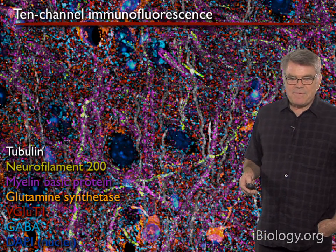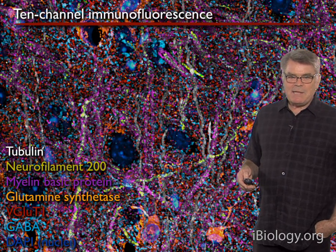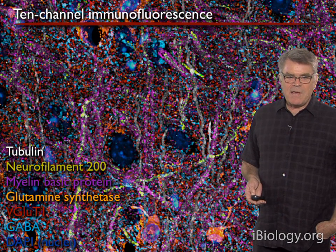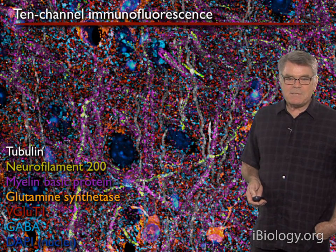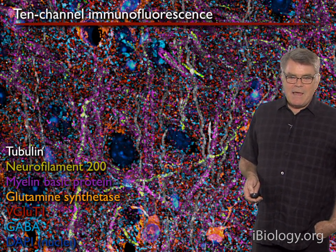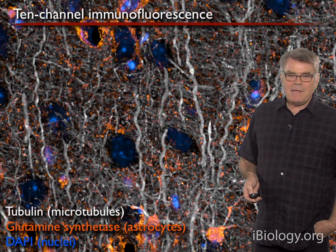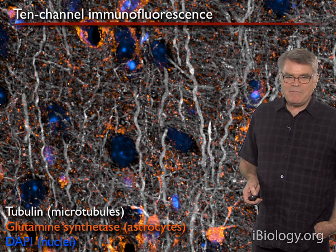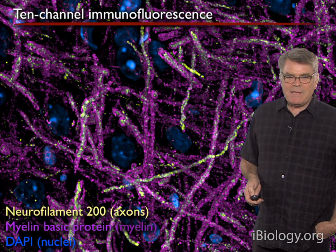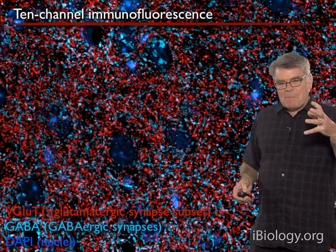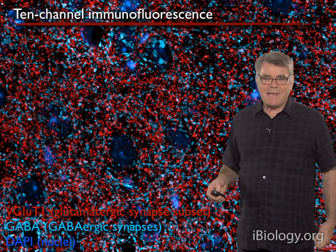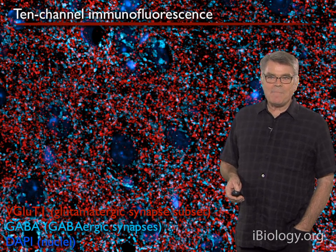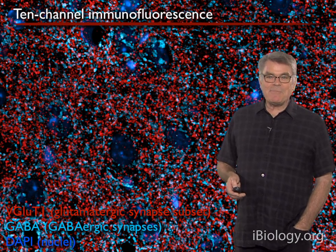Now we're going to look at a set of images that represent the ability of array tomography to capture lots of distinct protein channels. There are titles with the names of the protein antigens to which the antibodies used in this experiment are directed. These four slides represent the exact same volume — if I flip back and forth, you can see those nuclei sitting in one place. We're beginning to get a sense of what I mean when I say the molecular architecture of the brain. We think it means quite a lot, but we're quite a ways from understanding it.